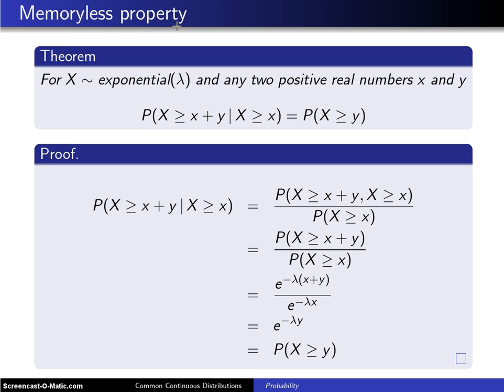Likewise, the exponential is the only continuous distribution that has the memoryless property. Here is the result for the random variable x having an exponential distribution with parameter λ and for any two positive real numbers x and y,